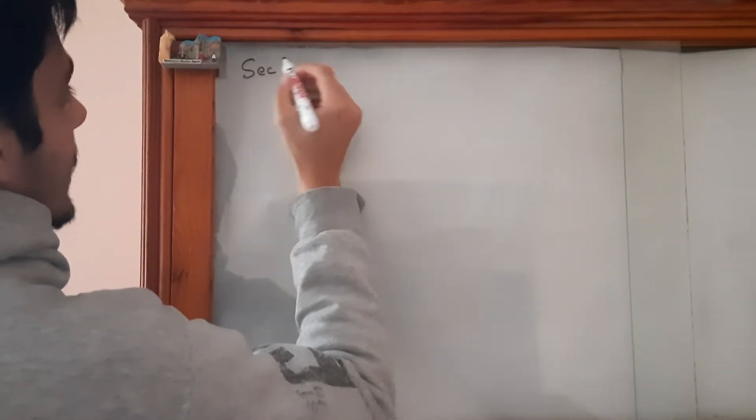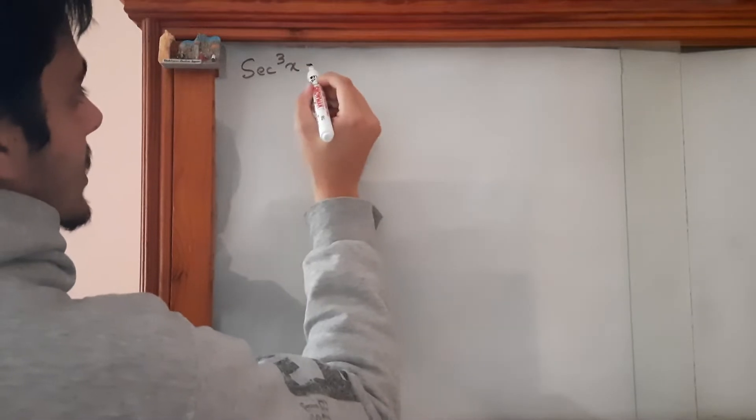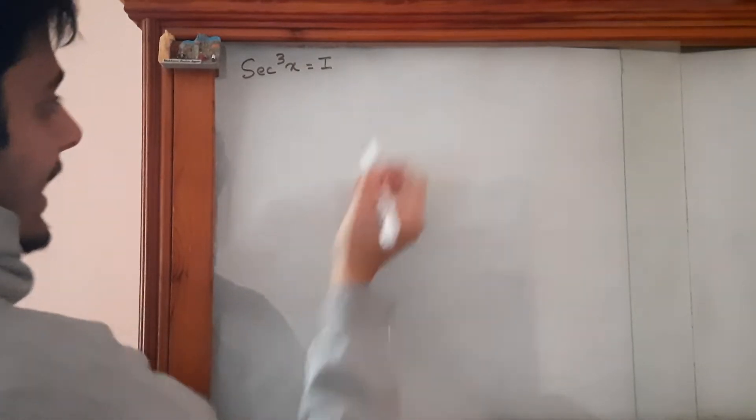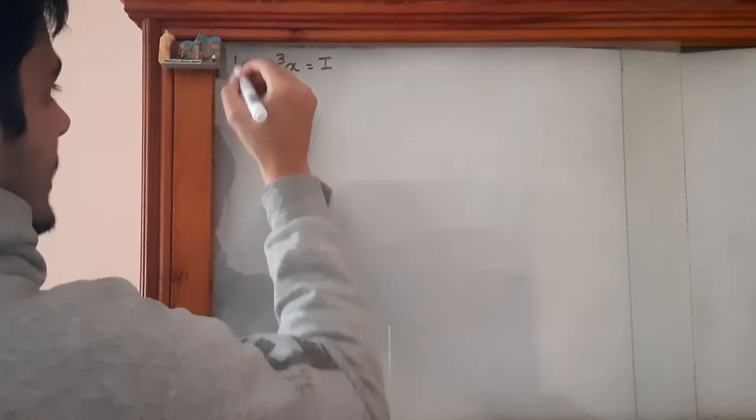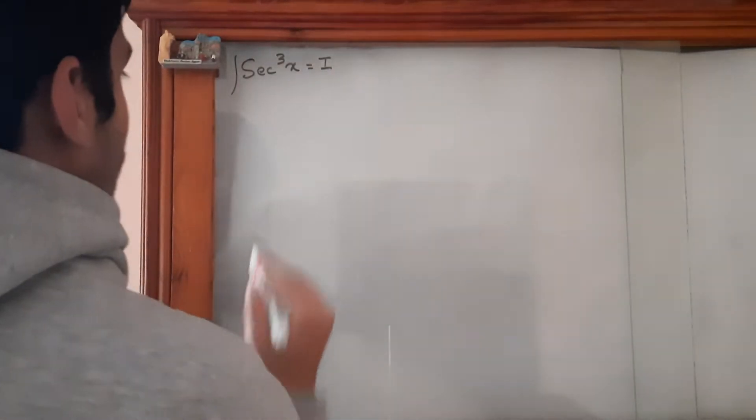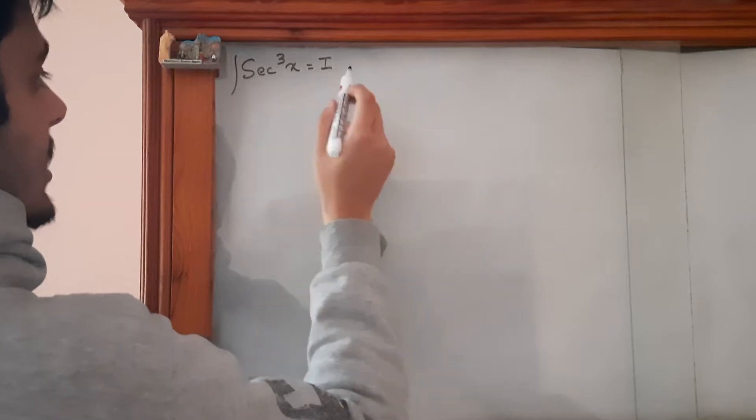To start this question, let's suppose the integral of sec³x equals I and proceed. Let's add the integration sign as well, so ∫sec³x dx = I.